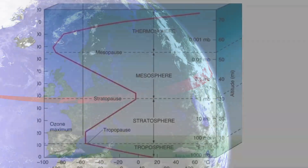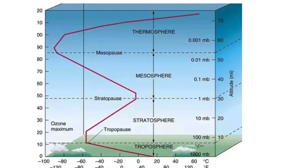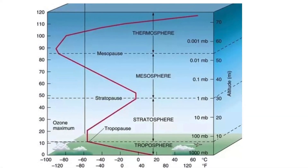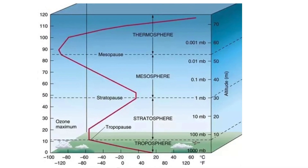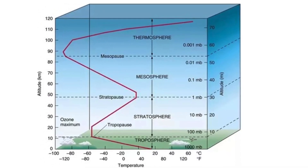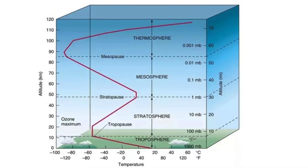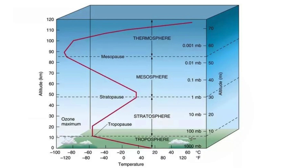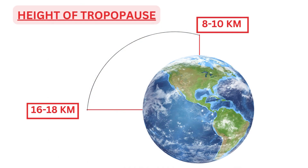Upper winds are winds near and above tropopause. They can be considered to be between a height band of 8 to 16 km, the reason being that the tropopause is at 8 to 10 km over poles and 16 to 18 km over the equator.